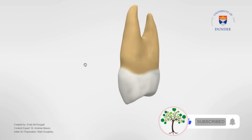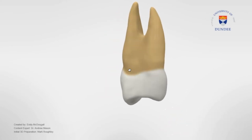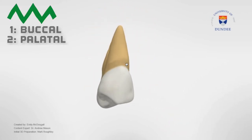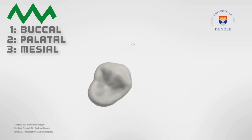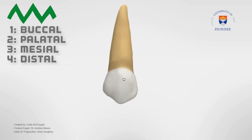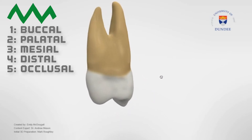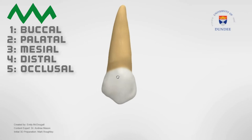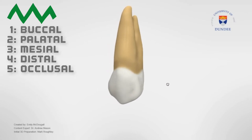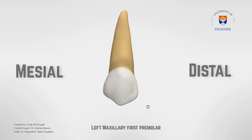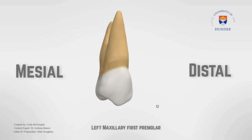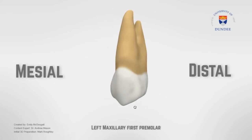As always, we'll look into the morphology from different angles such as the buccal, palatal, mesial and the distal view. However, I'll also cover the occlusal view towards the end of this video as I believe it can be helpful for this tooth. So the tooth you're looking at right now is the left maxillary first premolar.